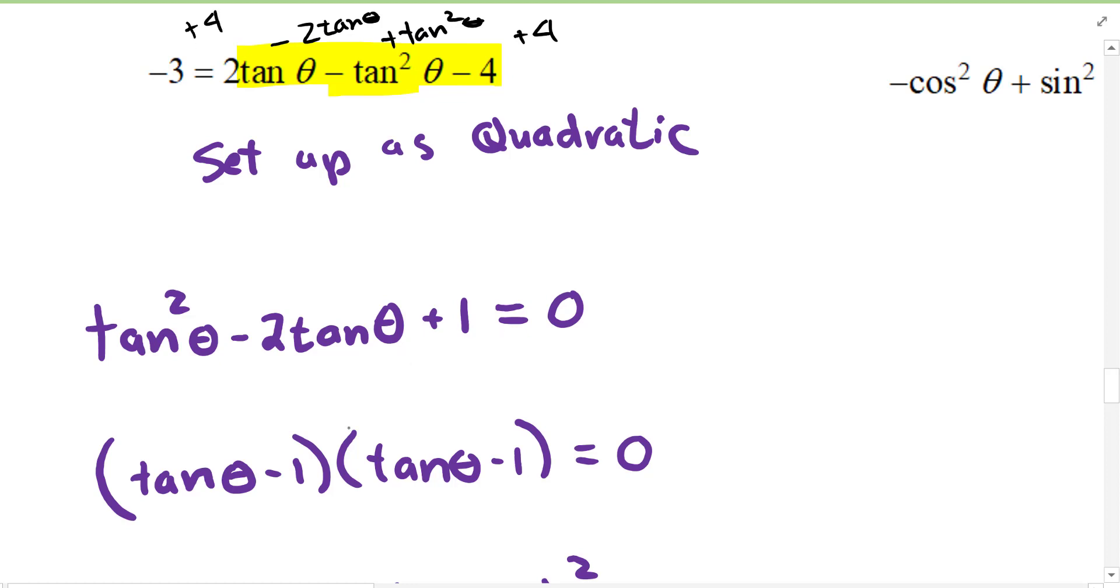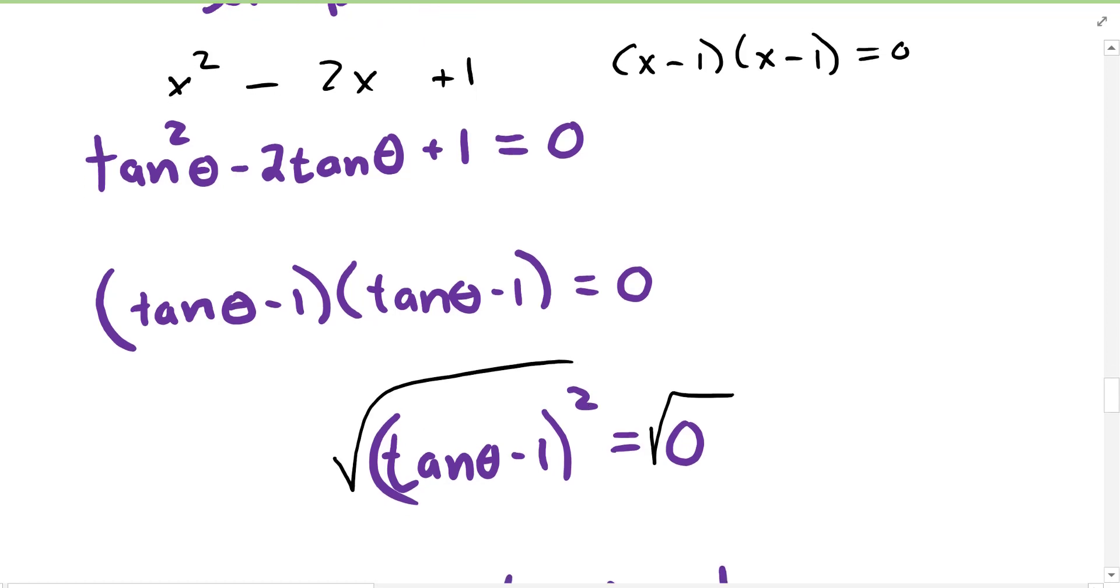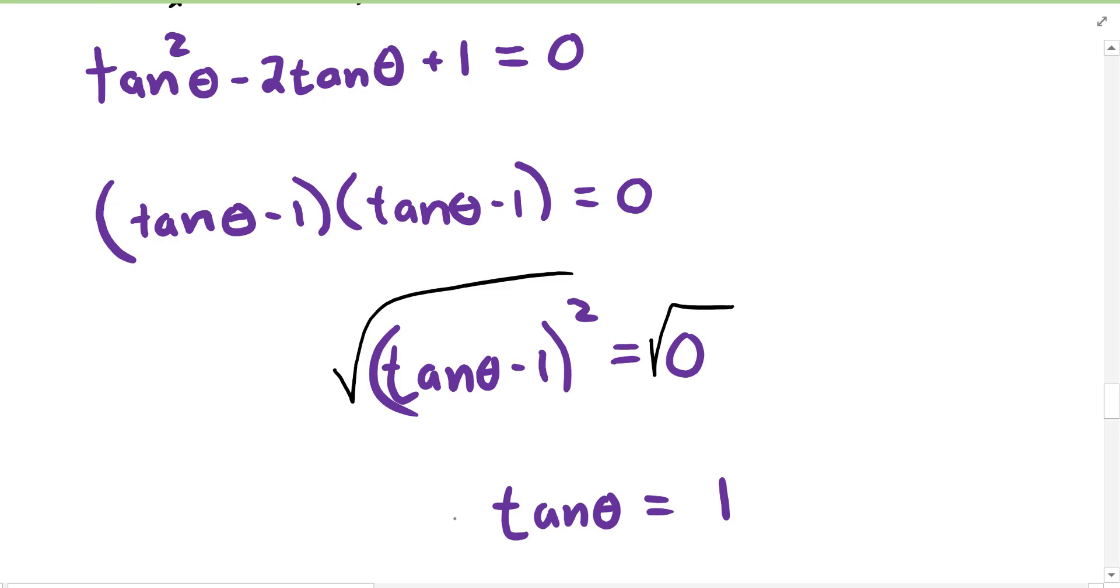Now this almost looks like x squared minus two x plus one, which factors to x minus one, x minus one. So guess what? This is going to factor to tangent minus one times tangent minus one, or tangent minus one squared. We're going to take the square root of both sides.